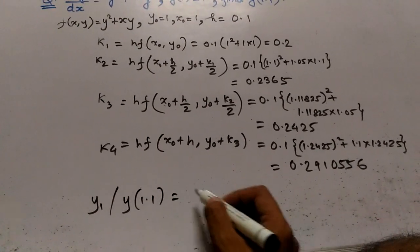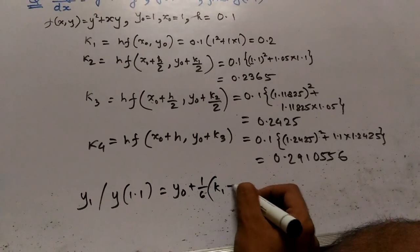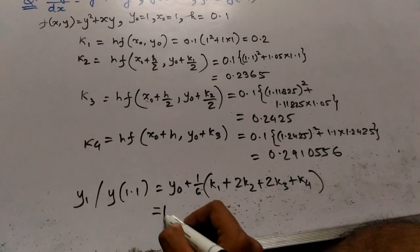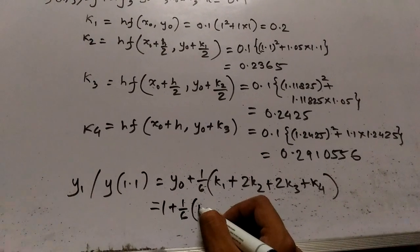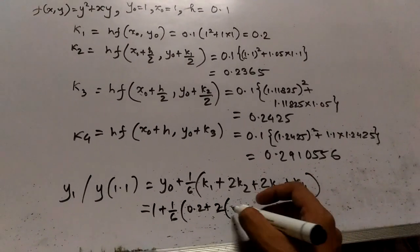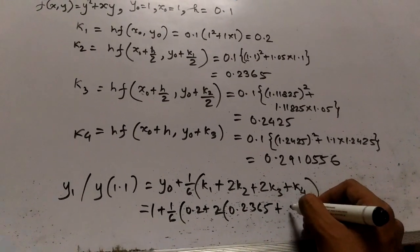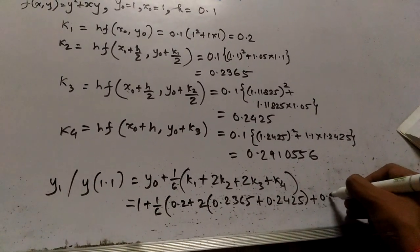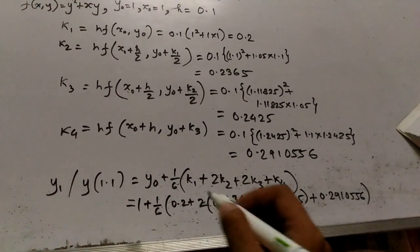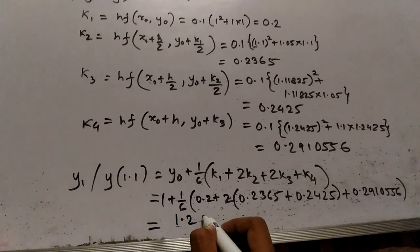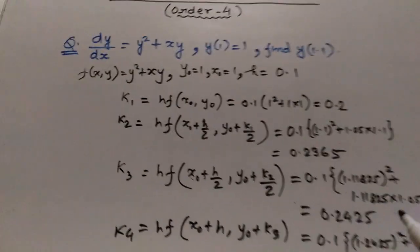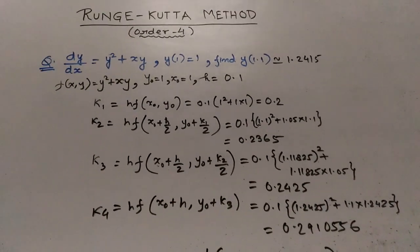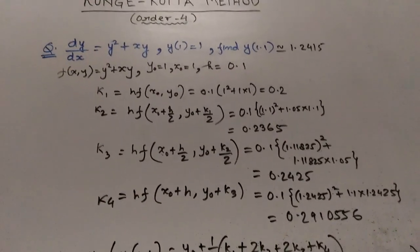So finally, y_1, or y at x equals 1.1, equals y_0 plus (1/6) into (k1 + 2k2 + 2k3 + k4), which is 1 plus (1/6) into (0.2 + 2×0.2365 + 2×0.2425 + 0.291056), giving approximately 1.2415. So y at x equals 1.1 is approximately 1.2415. This was the 4th Order Runge-Kutta method — I hope you find it easy.